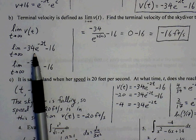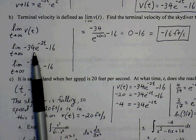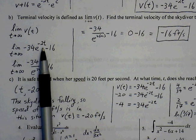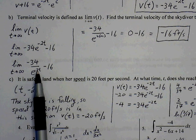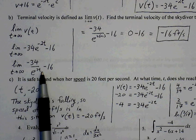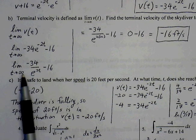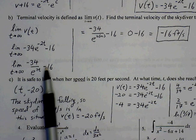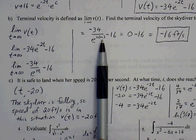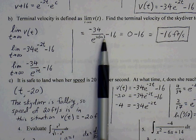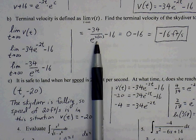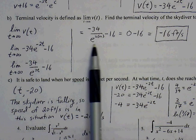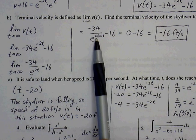So negative 34e to the negative 2t minus 16. Now it's going to be a little bit easier to evaluate if we can convert that to a positive exponent. So I'm going to bring the e to the 2t down, make it negative 34 over e to the 2t minus 16. Now all we do is plug infinity in for t and see what happens to this expression. So if I plug infinity in for t, I get negative 34 over e to the (2 times infinity) minus 16. Now think about this expression. E to the 2 times infinity, this is essentially going to be infinity.